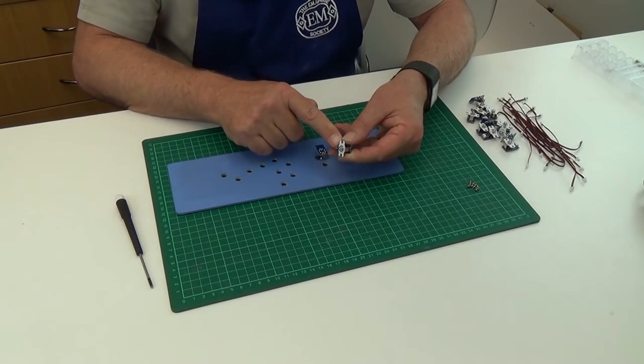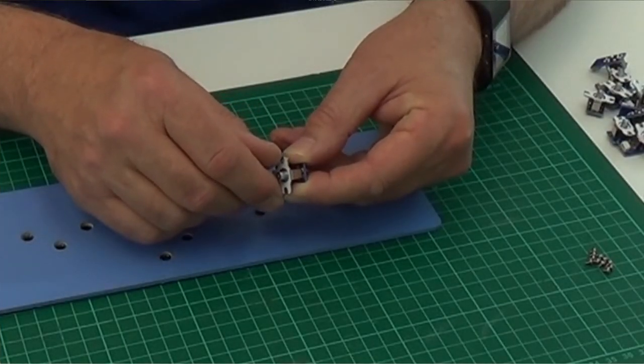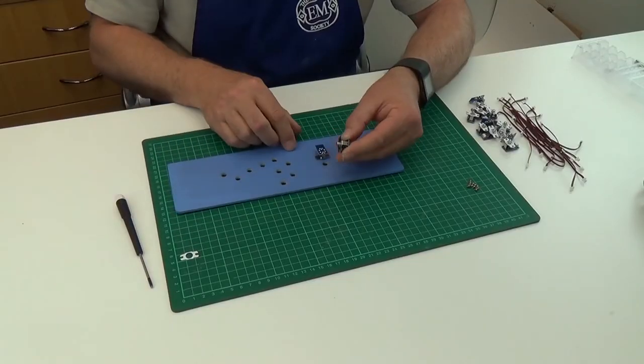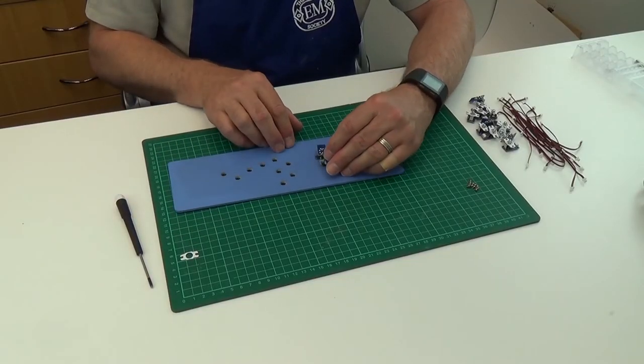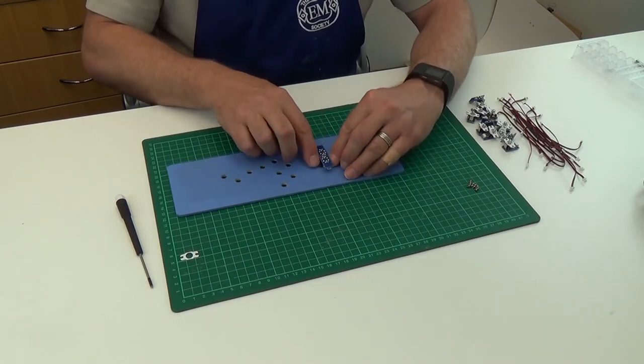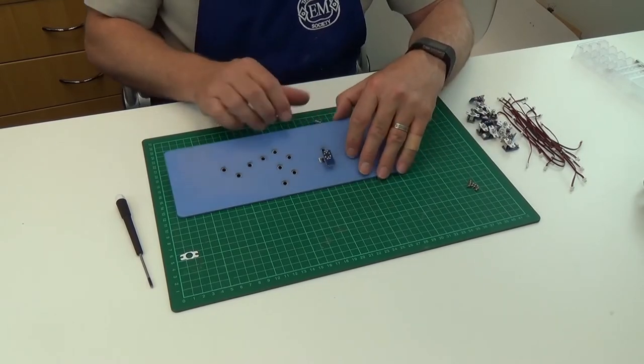The white strip on the switch is there to protect some adhesive. Peel this off and stick the switch in position. This is another good reason for painting both sides of the panel as it won't stick that well to bare wood. The other reason is that the paint protects the wood from getting damp and warping.